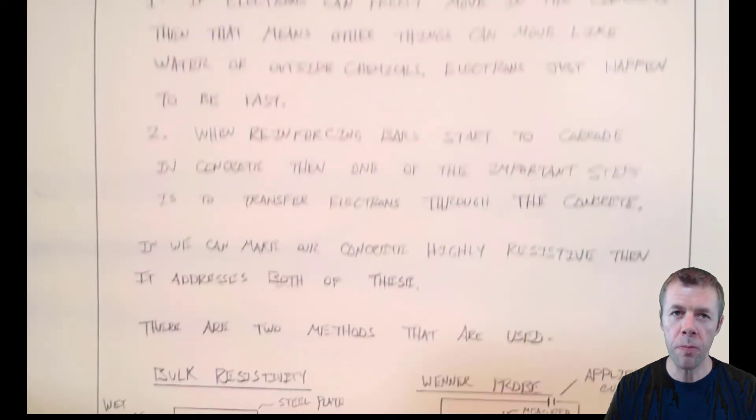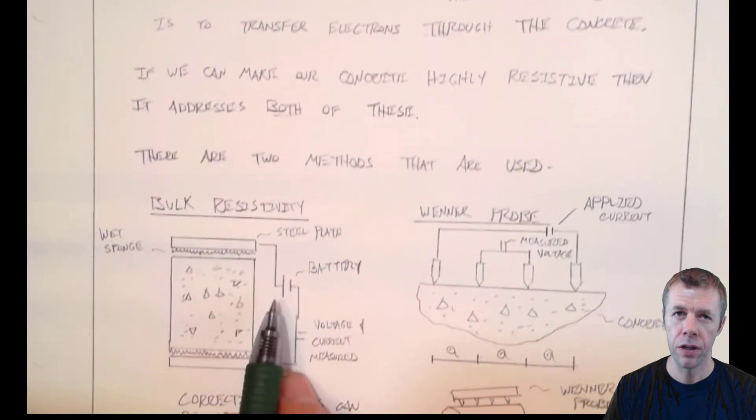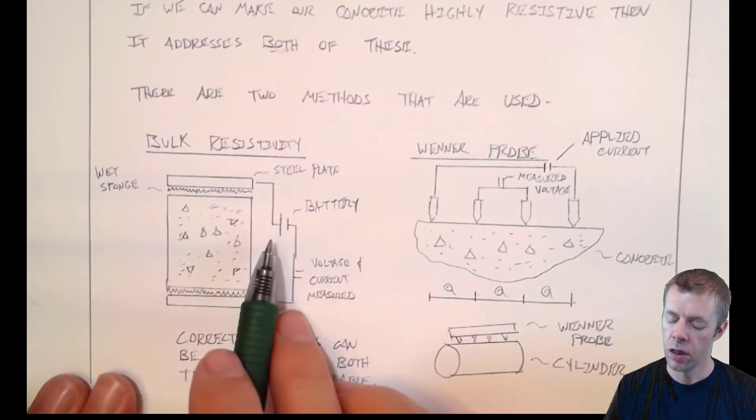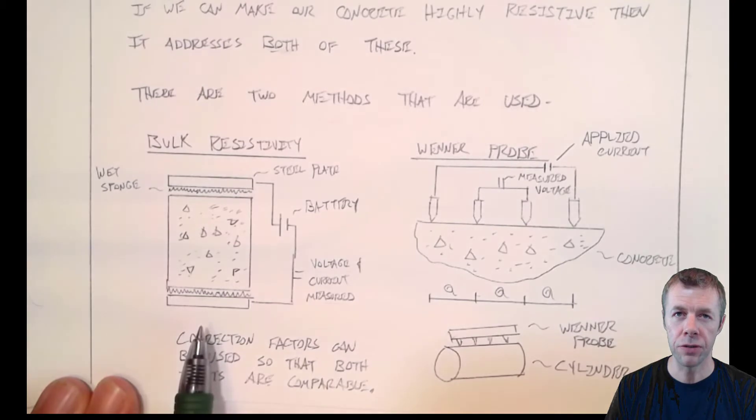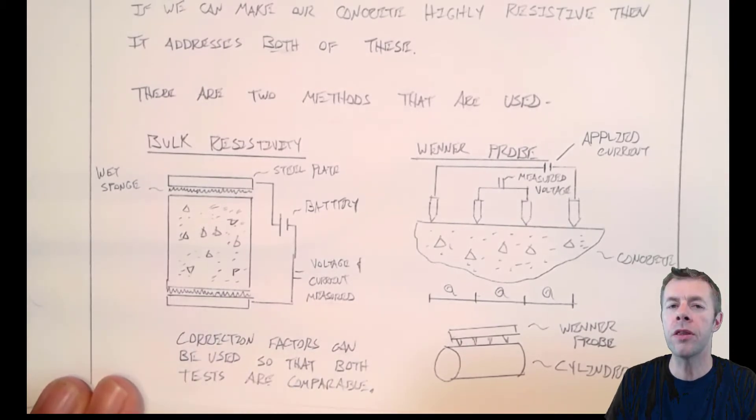There are basically two main methods used to look at this. One of them is called the bulk resistivity test, and one of them is called the winter probe. Now there are some folks that think these are different tests. However, if you use the right correction factors, that means these account for the geometry and the location of the electrodes, you'll find that these two tests give you practically the exact same number, almost exactly the same.